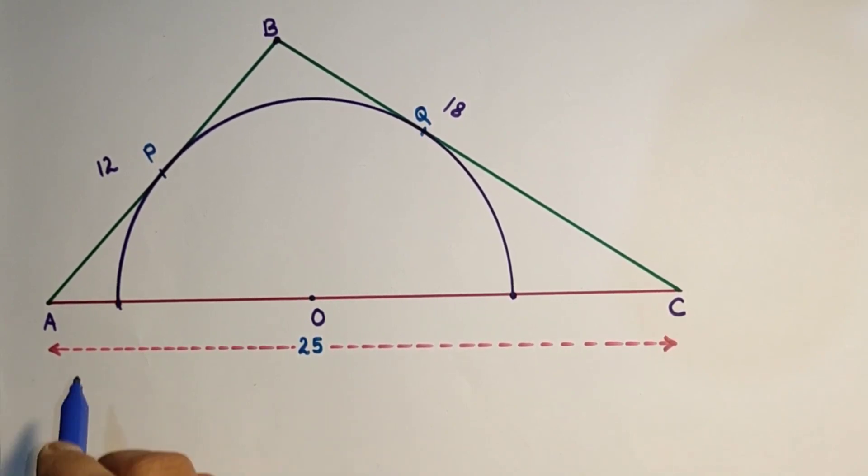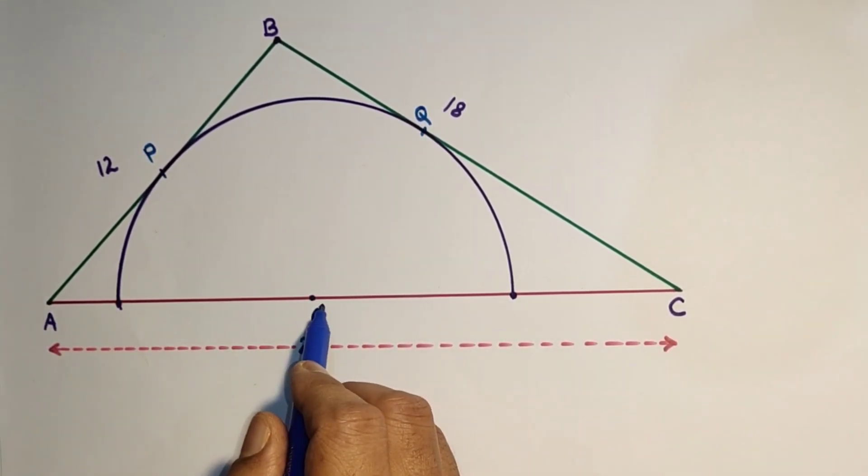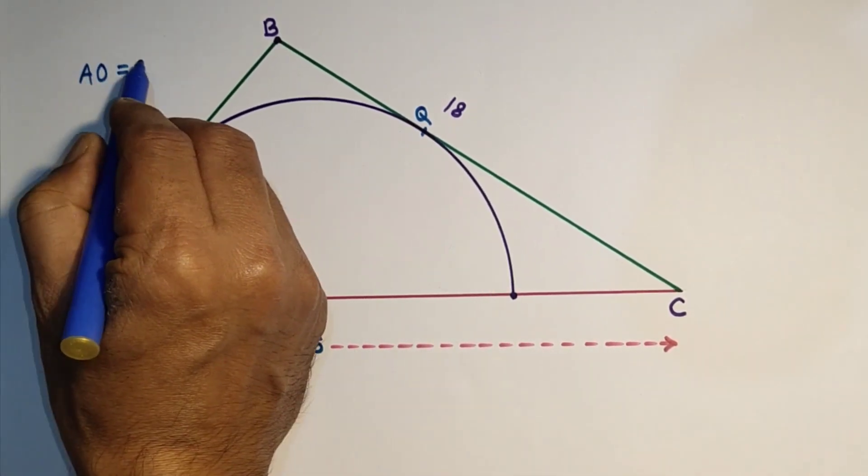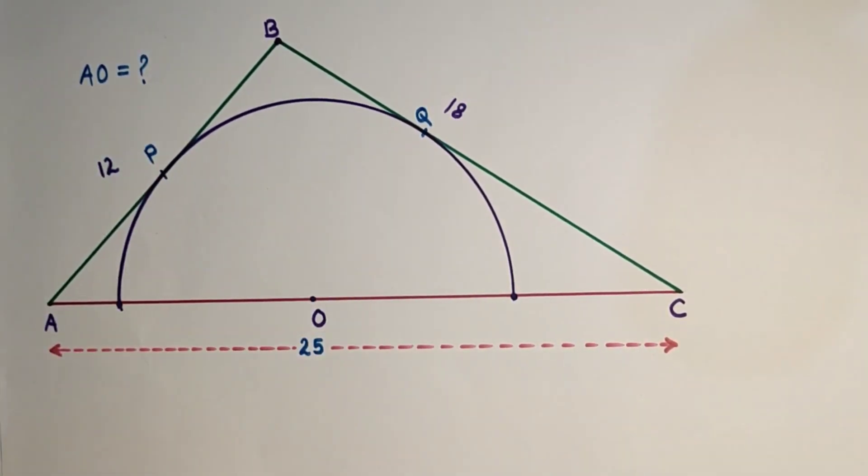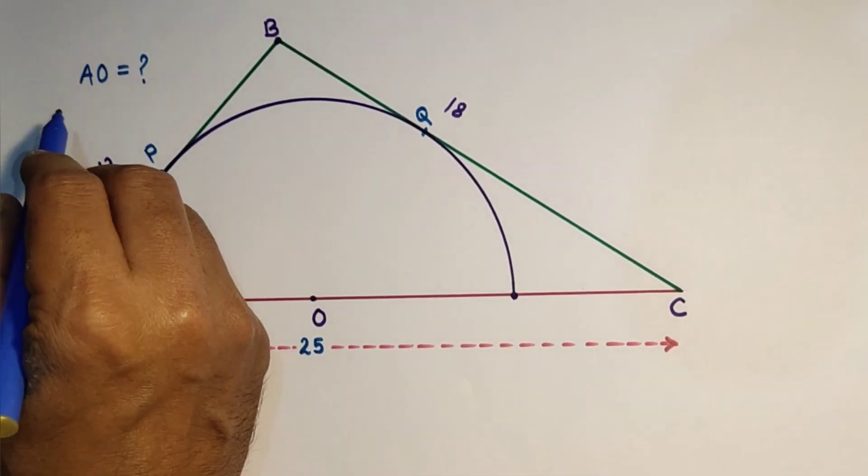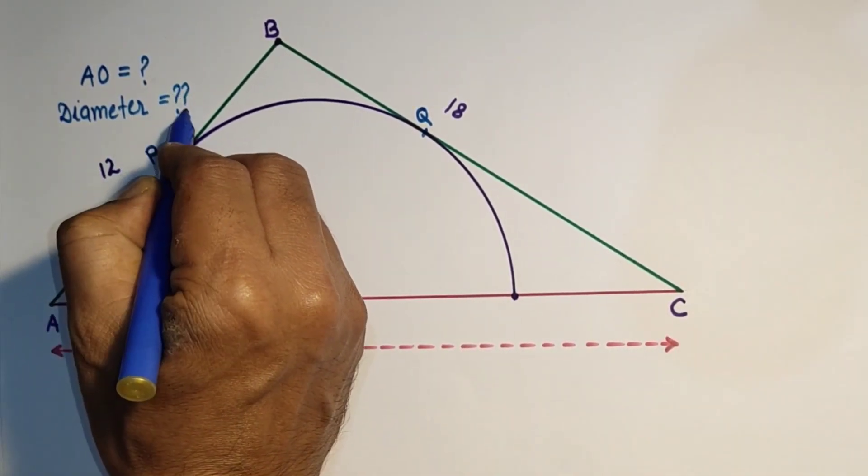We have to find the length of AO and the diameter of the circle. Length of AO is to be found and the diameter - these two things we have to find.